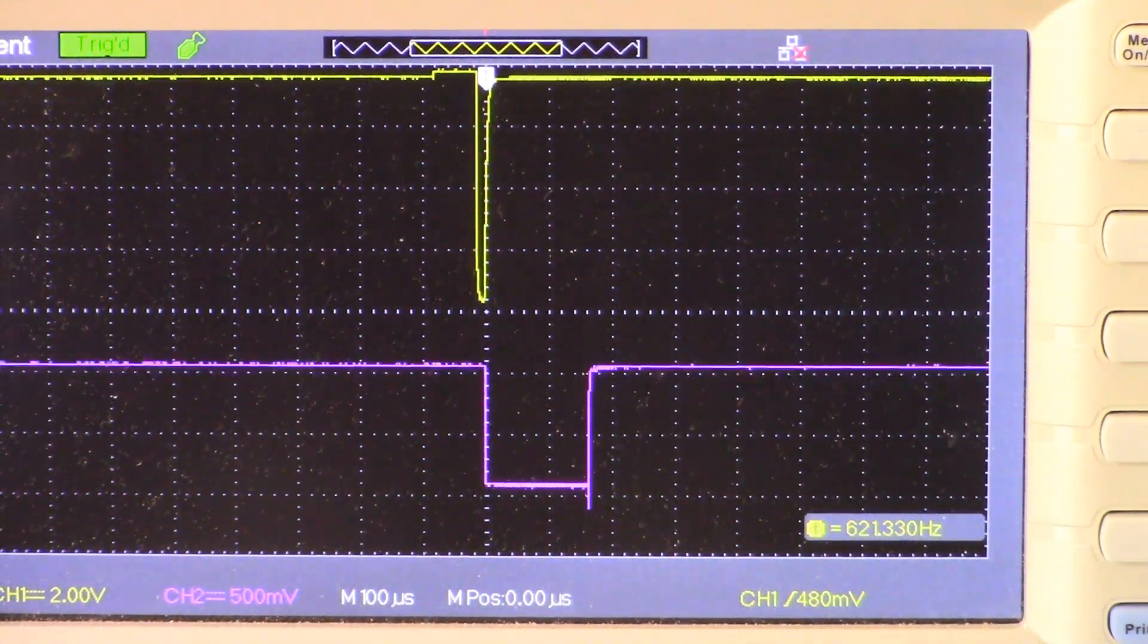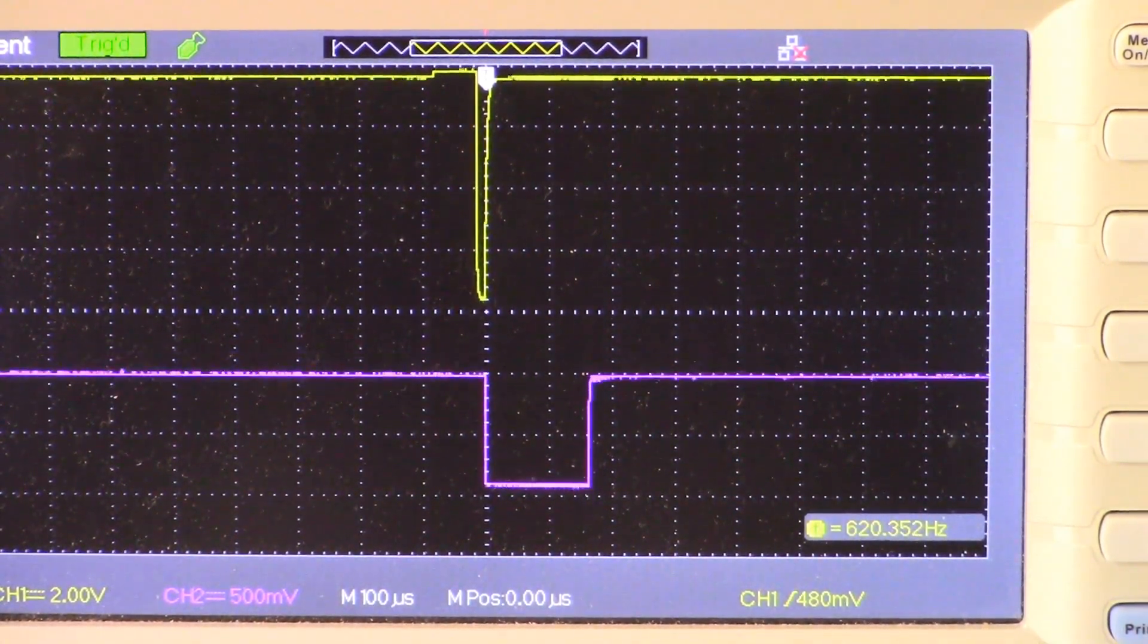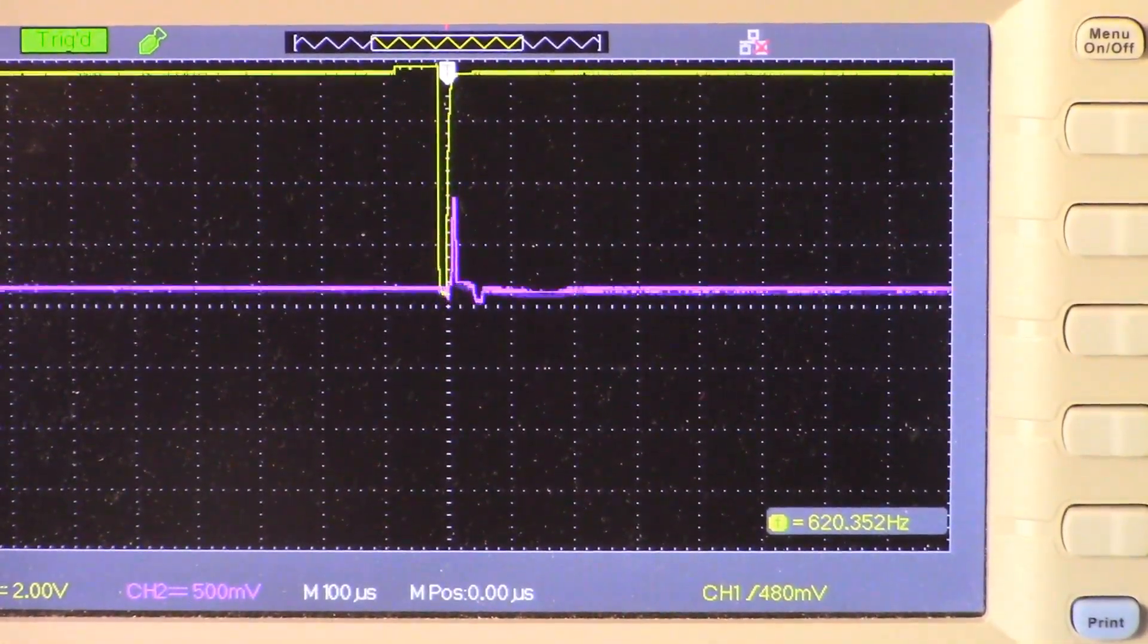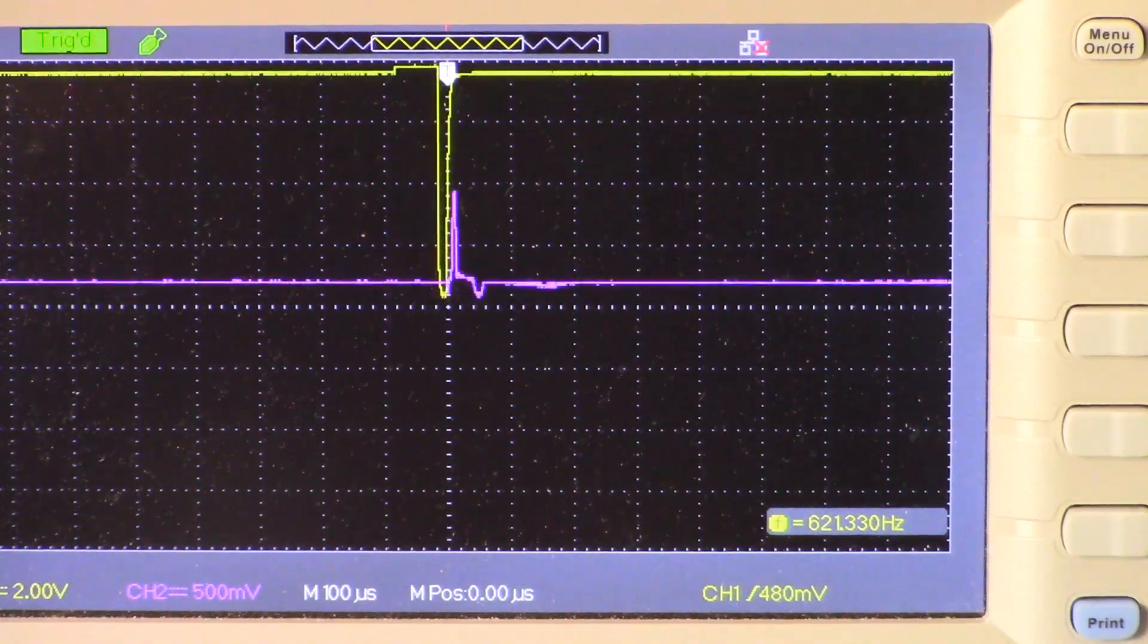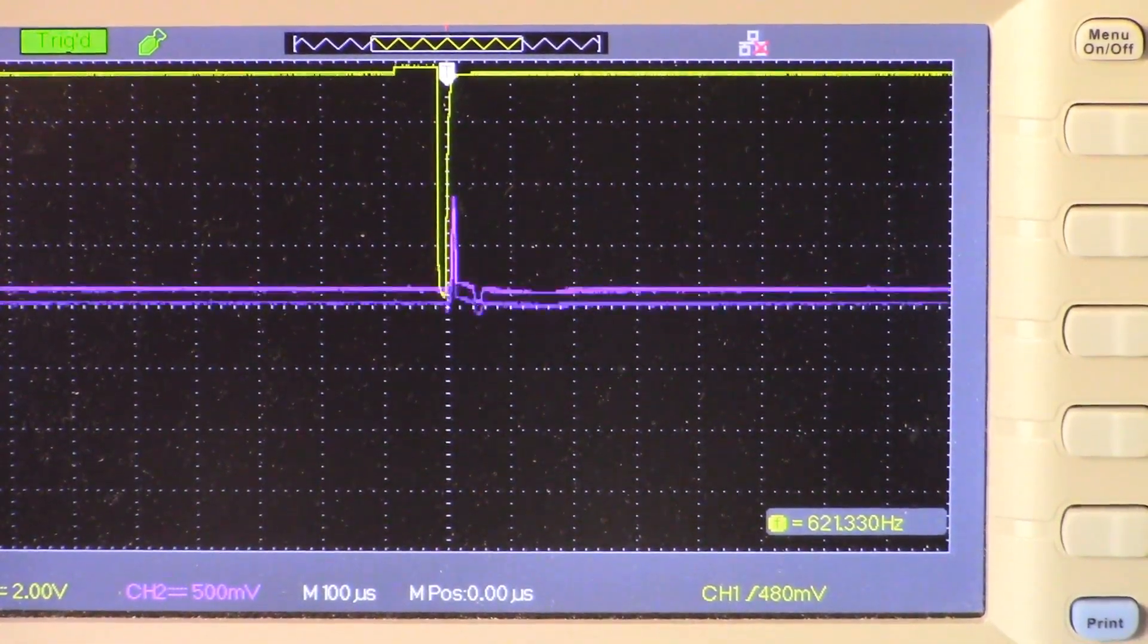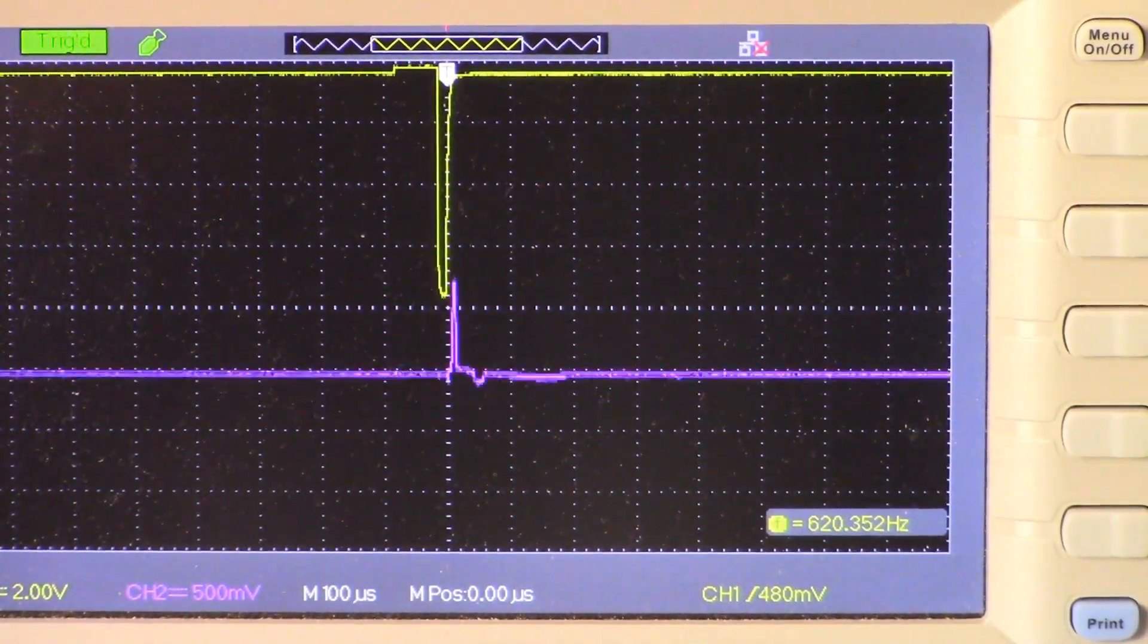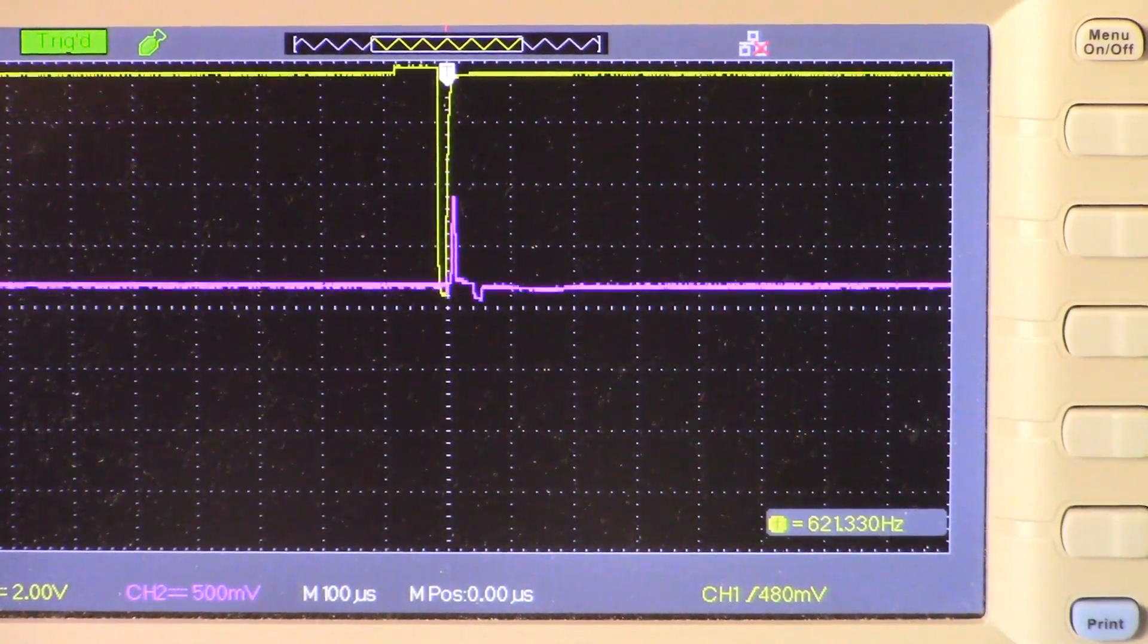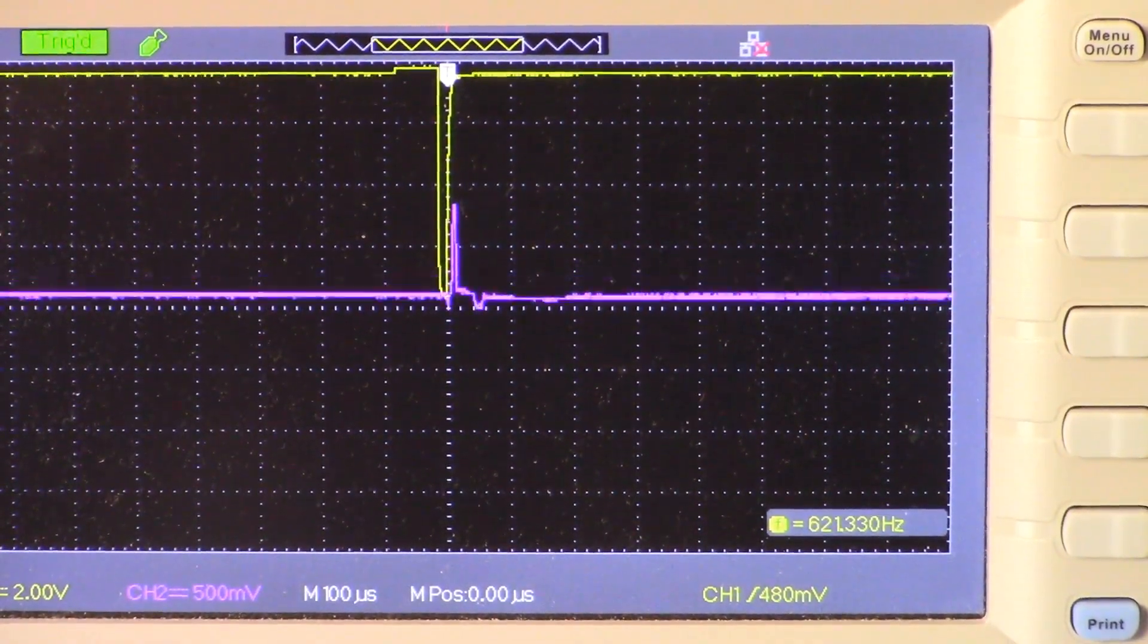Not sure why I said 555 - it's obviously an LM 358. That's pin 1, and that's also feeding into the transistor.